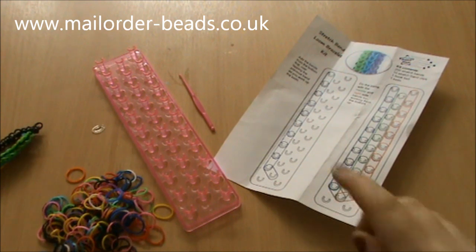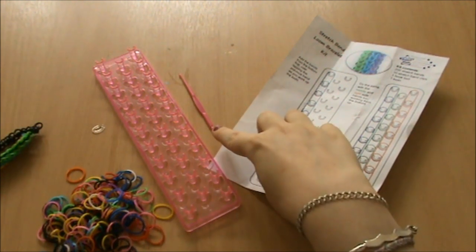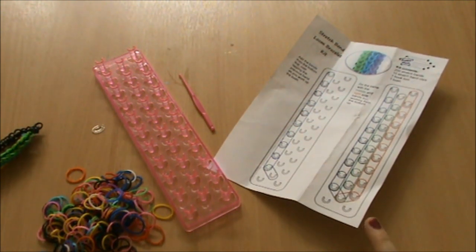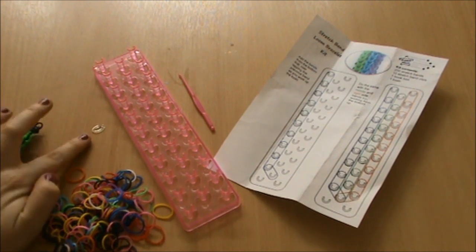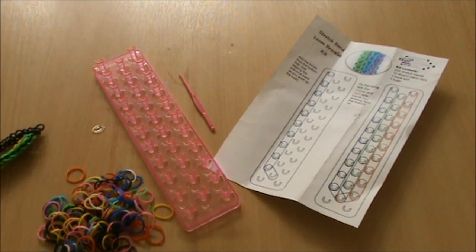In your kit you'll receive the loom, a hook, the instructions on how to make this bracelet, you'll receive 10 of the C-clips and you'll also receive 200 stretch bands so you can make lots of bracelets in lots of different colours.